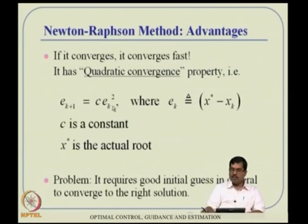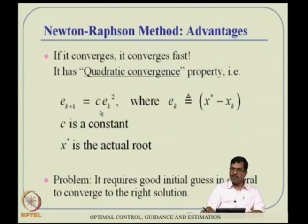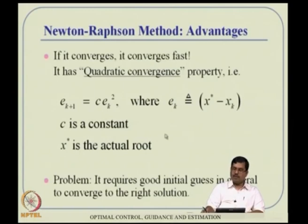The beauty of Newton-Raphson is its quadratic convergence property: E_{k+1} ∝ C · E_k². Since relative errors are less than 1, E_k² is even smaller, meaning convergence is very fast. This is called quadratic convergence.